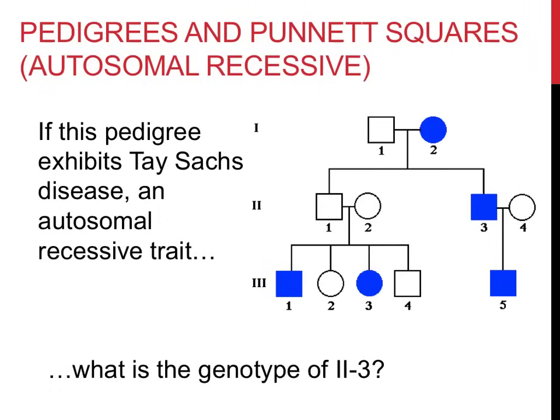The second set of example problems states: if this pedigree exhibits Tay-Sachs disease, an autosomal recessive disorder, what is the genotype of Roman numeral 2-3? Identify Roman numeral 2-3 on this pedigree. Individual 2-3 has this particular recessive disorder. The only way to have a recessive disorder is to be homozygous recessive for it — lowercase h, lowercase h, for example.